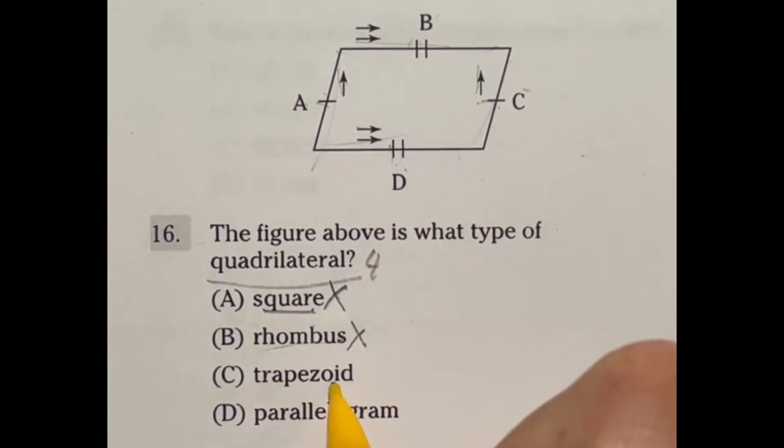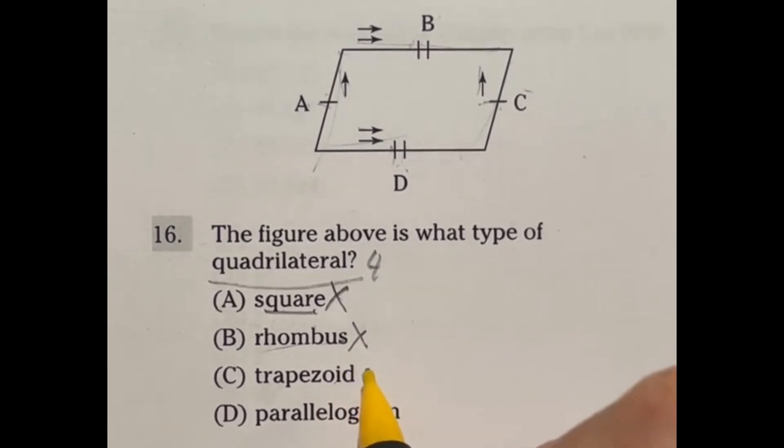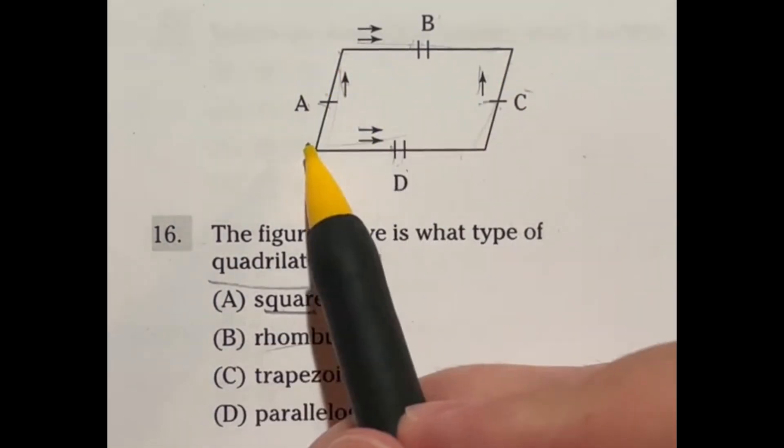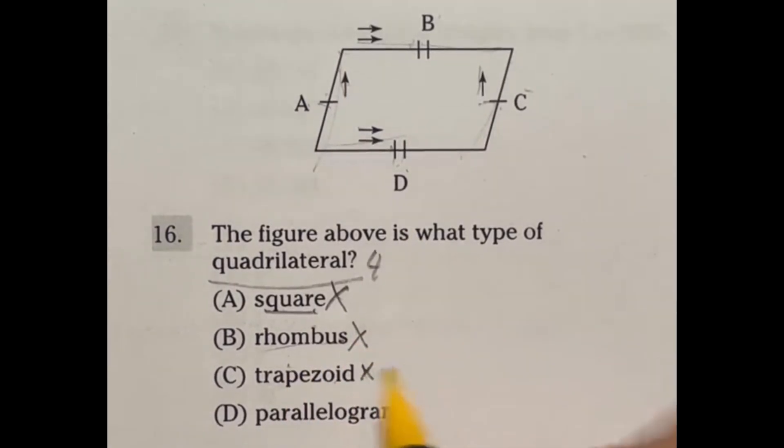A trapezoid means that two sides are parallel and the other two sides are not. It's exactly one pair are going to be parallel. Looking at these, both sets are parallel. So that means that it can't be a trapezoid.